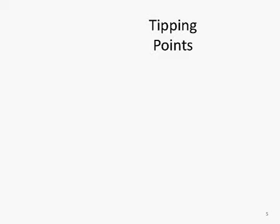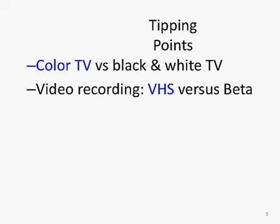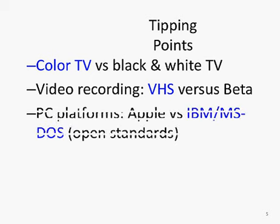Let's think about some tipping points for competing technologies. There was a tipping point that caused color TV to become dominant over black and white. In the early 80s, VHS defeated the Betamax videotape format. We also saw Apple versus IBM MS-DOS, and Windows became the dominant platform. Even though Apple is making a comeback, the tipping point already occurred. Typically when a tipping point occurs, the competing technology goes out of business, like Betamax or black and white TVs.